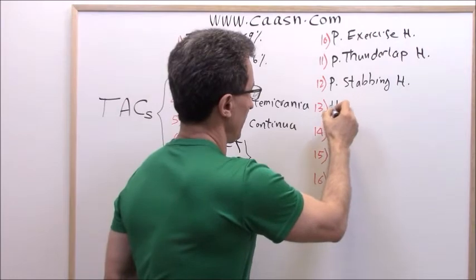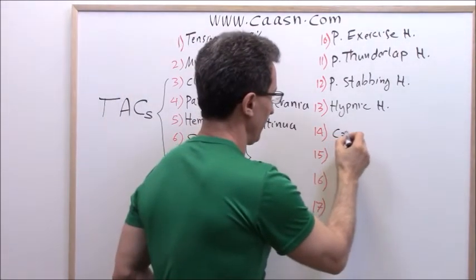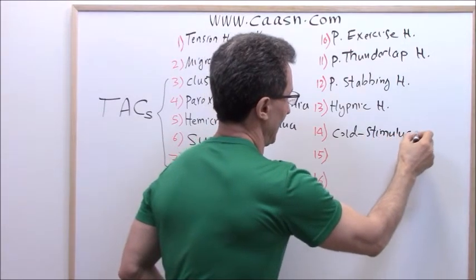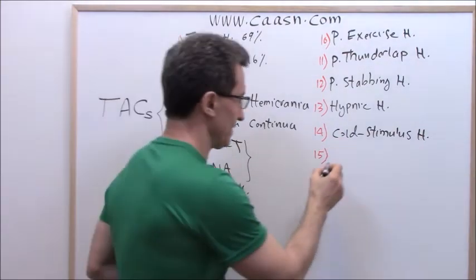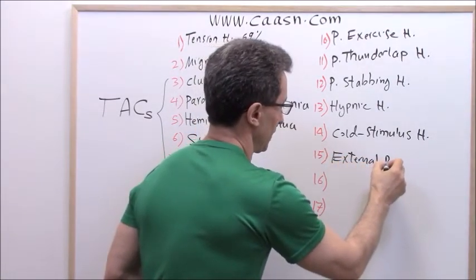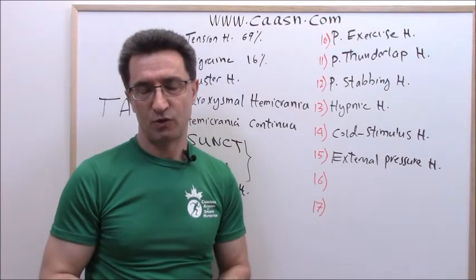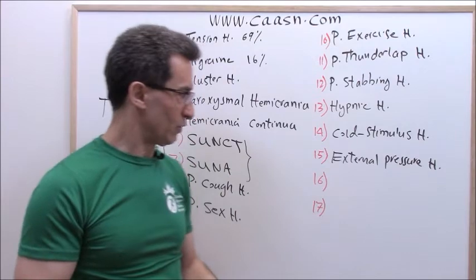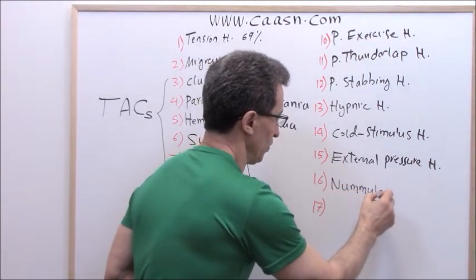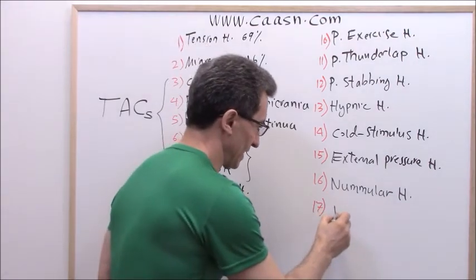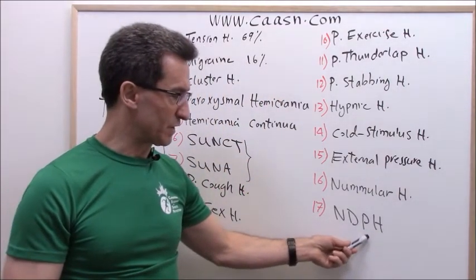Number thirteen is hypnic headache. Number fourteen is cold stimulus headache — this is where ice cream headache falls. Number fifteen is external pressure headache; for example, athletes who wear helmets or goggles may develop this type. Number sixteen is called numeral headache. And the last one, number seventeen, is NDPH, which stands for new daily persistent headache.